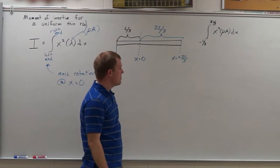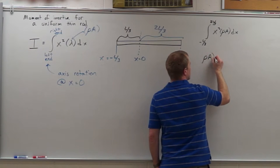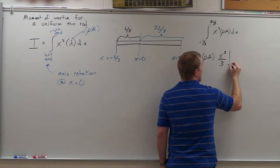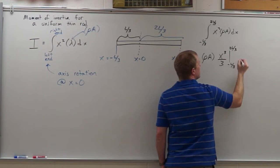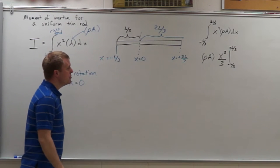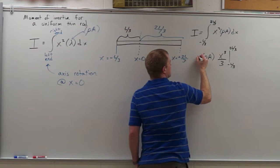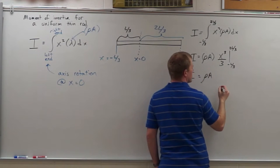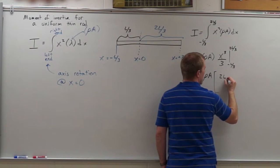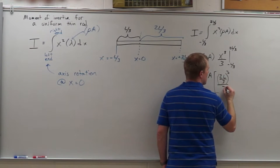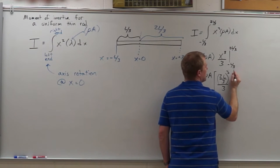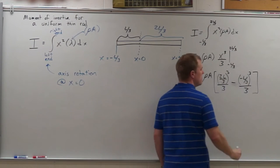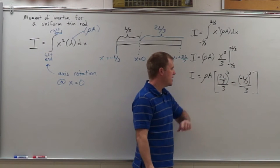Moving the constants out front, we have density times cross-sectional area times x cubed divided by three, evaluated from negative L over three to two L over three. Evaluating this: I equals density times cross-sectional area times the quantity two L over three cubed divided by three, minus negative L over three cubed divided by three. Because it's a cube, those negatives will end up canceling, so we get a plus.